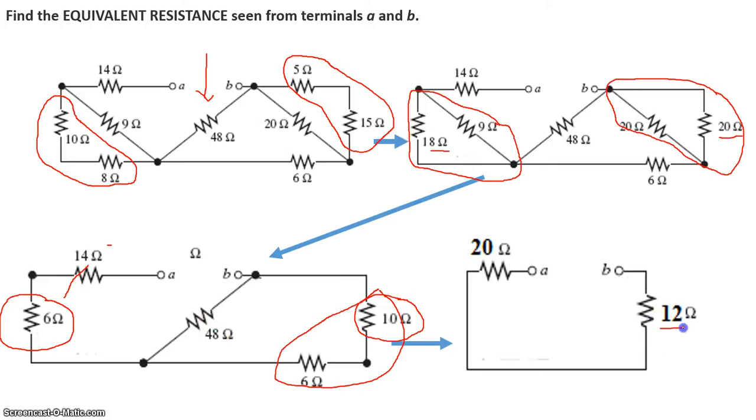So that gives us 12 ohms. So when I look at it from this terminal right here, AB, 20 ohm is in series with 12 ohms. So what we get is Rab is equal to 20 ohm plus 12, which is equal to 32 ohm. So here's an exercise in finding the equivalent resistance.